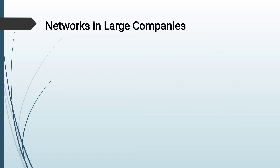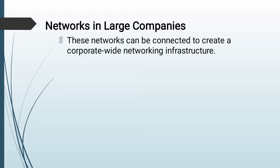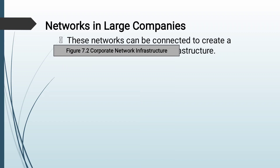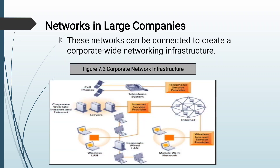In networks and large companies, as a company expands, hundreds of small local area networks can be gathered together and connected to create a corporate-wide networking infrastructure. These numerous local area networks are connected to other LANs and company-wide corporate networks to form the network infrastructure for a large enterprise. A corporate website, corporate intranet, and possibly an extranet are supported by a number of powerful servers, some of which connect to additional powerful computers powering back-end systems.